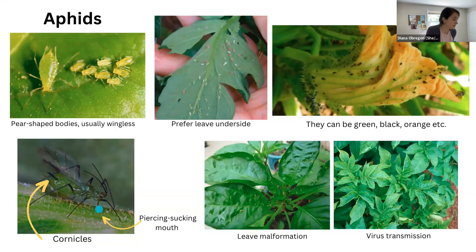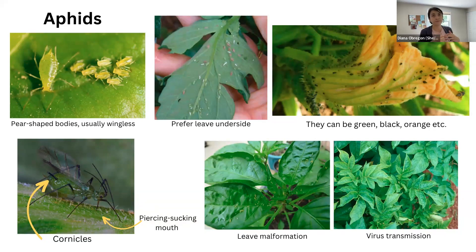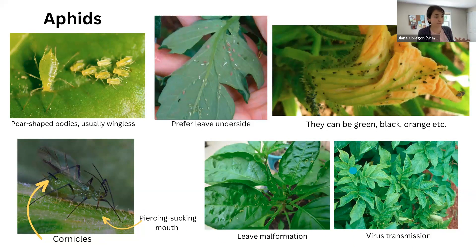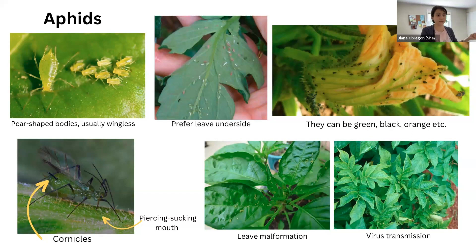You can see them here in this picture piercing and sucking the leaves. Because they like the small new leaves, they can lead to leaf malformation. They can also transmit viruses — so if you see a mosaic pattern on the leaves, this could be caused by an aphid transmitting a virus from plant to plant.